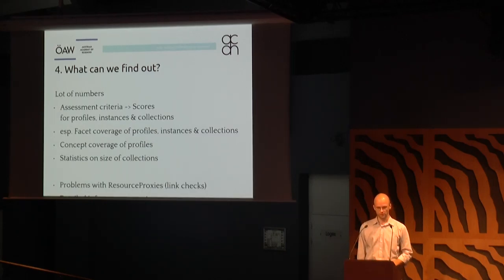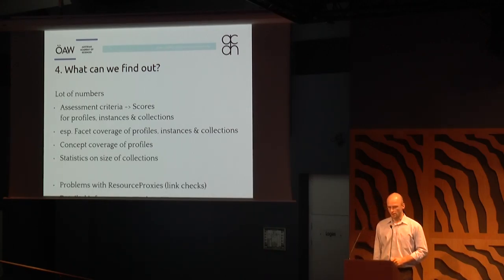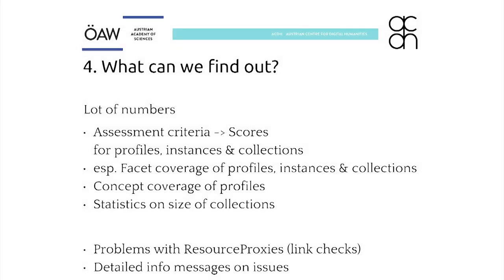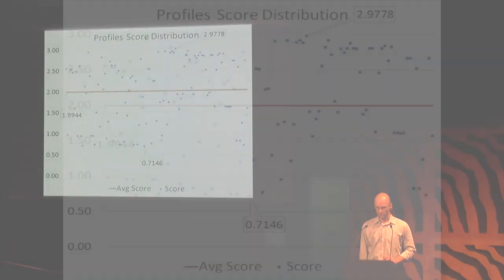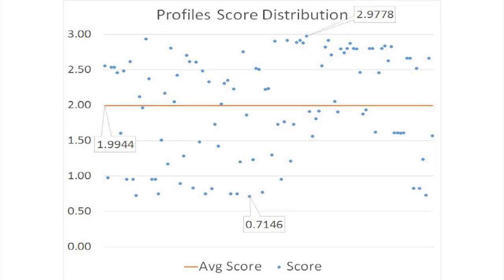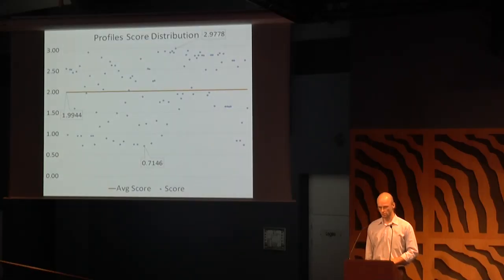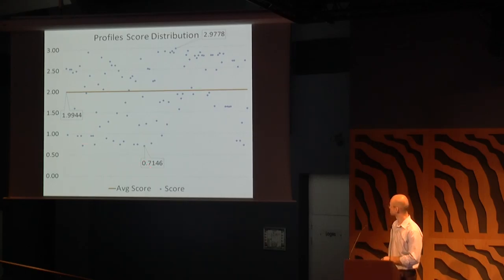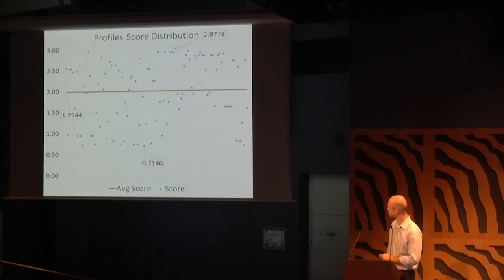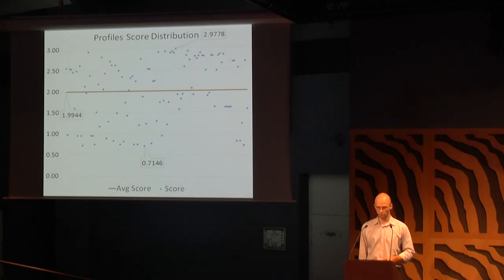Now for some actual numbers gathered from the curation module. We get assessment criteria scores, facet coverage information, concept coverage, and statistical numbers on the collections. The score distribution for profiles goes from 0.7 for the worst to almost 3 for the best profile — quite a spread, so the scoring seems to work rather well. The average is around 2. These numbers must be interpreted carefully, as the criteria are normalized to zero to one.